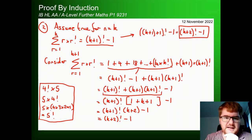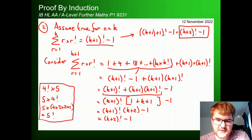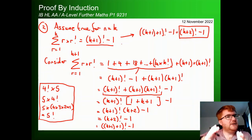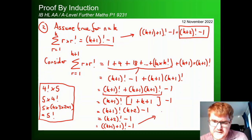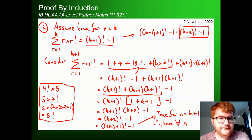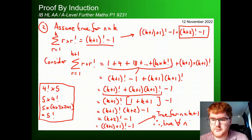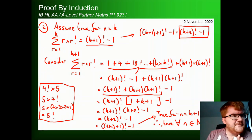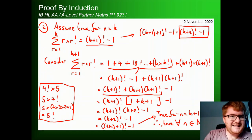We can write this as (k+1+1)!−1, making it clear it's in the required form. Therefore, it is true for n=k+1 and true for all n in the natural numbers. From this second example you just need to trust the process, keep working through the algebra, and you will get to the right answer.